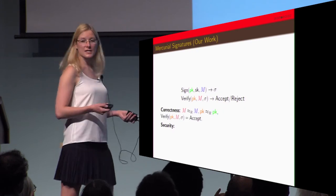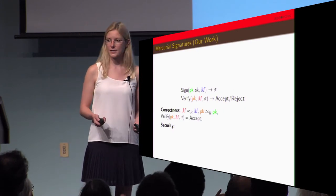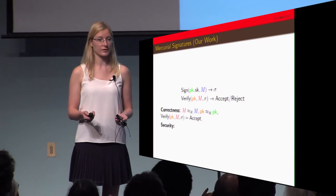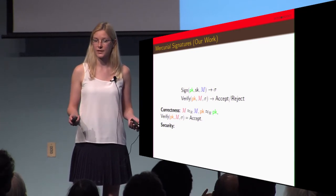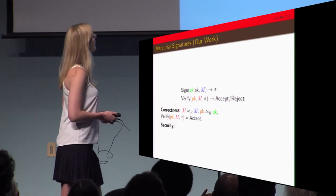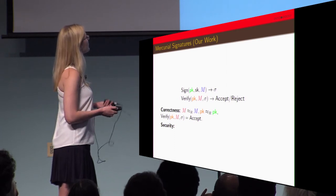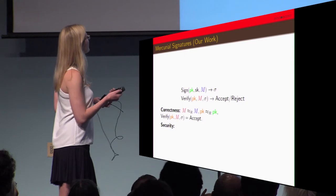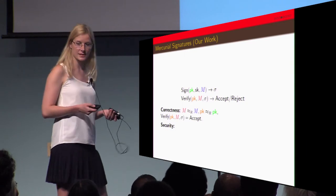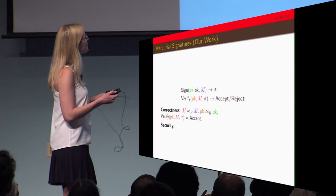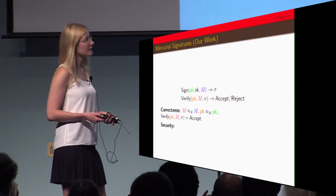Then what we did is we said well okay so we're able to randomize the message into the same equivalence class, what about randomizing the public key as well. When we took a look at this idea we were able to extrapolate and say okay so correctness in this case means the messages have to be in the same equivalence class, public keys have to be in the same equivalence class, and it still verifies.